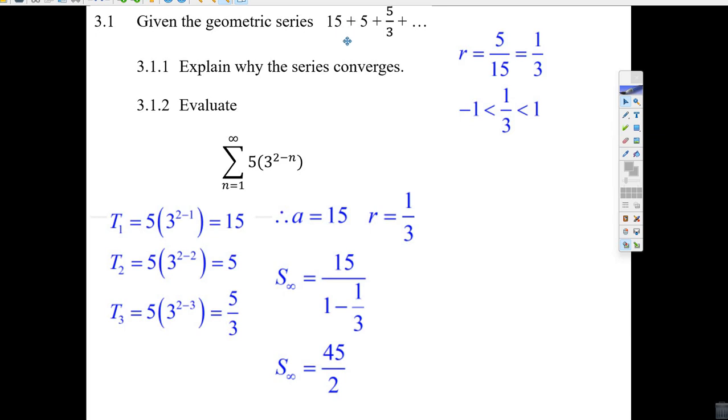It's geometric, and if you want to find the common ratio, all you do is divide consecutive terms. T2 divided by T1. 5 divided by 15, reduced. R is 1 over 3.